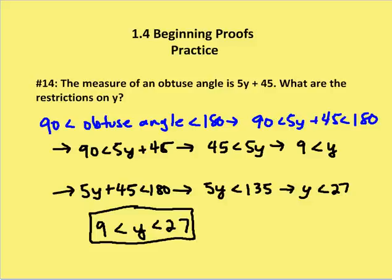So if I subtract 45 from both sides, I end up with 45 is less than 5y. And I also end up with 5y is going to be less than 135 degrees.